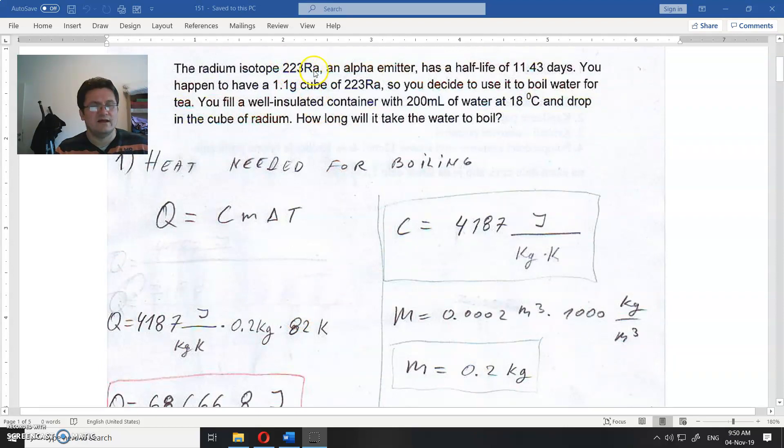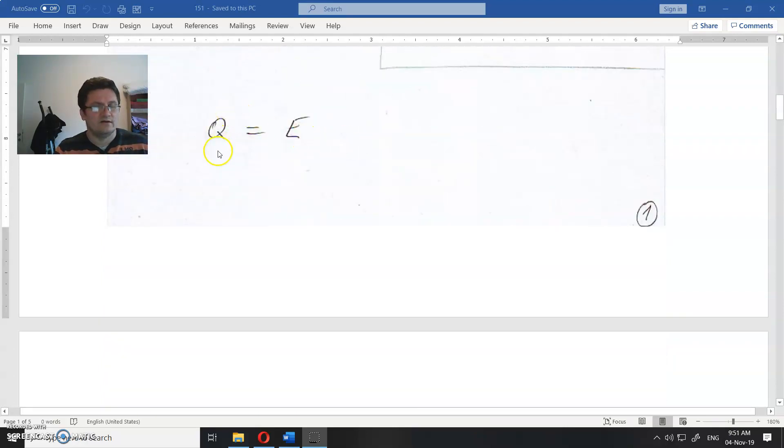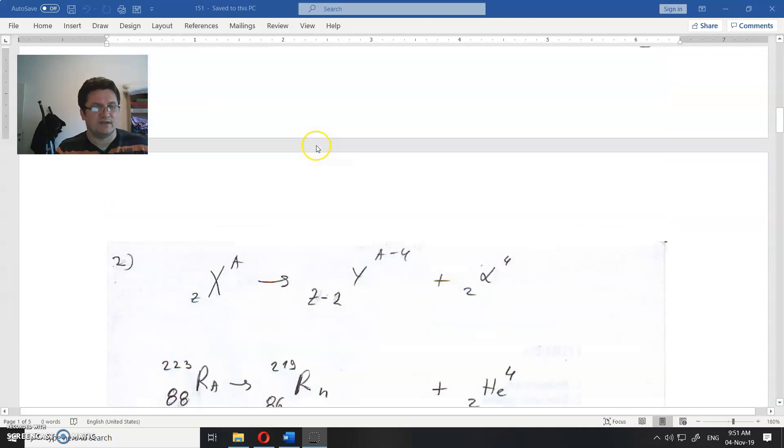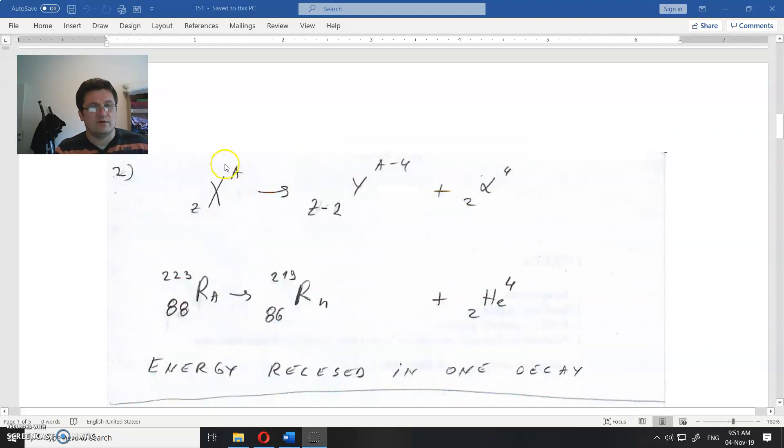Now let's see how much heat we get released from this 1.1 gram of radium. Heat equals energy. What is the energy? How can we calculate the energy in this decay? We have one element that will go into another element and release an alpha particle.